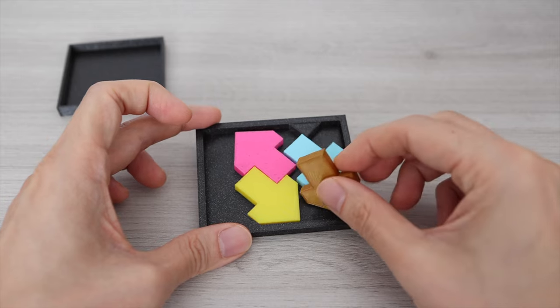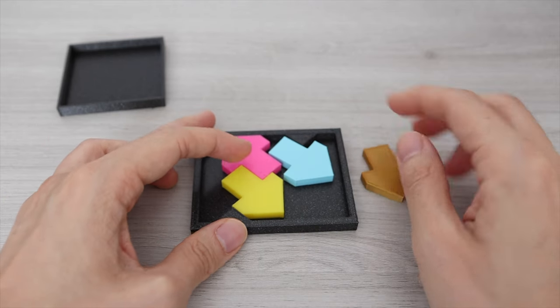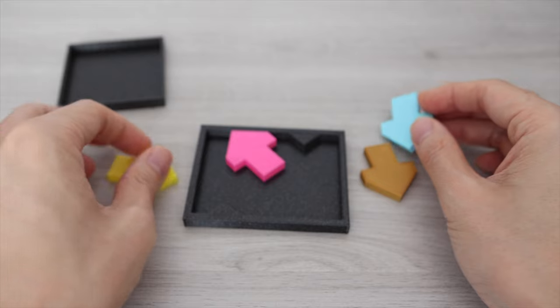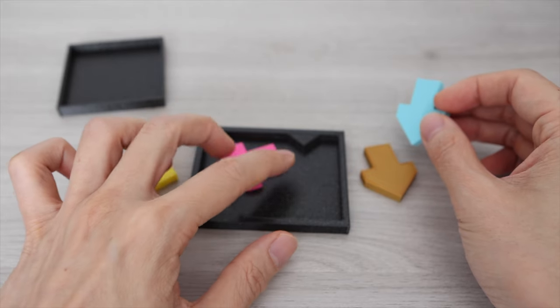After a while I spotted that given the tray is somewhat symmetrical in a rotational sense and the arrows are also symmetrical maybe there is a pattern for arranging them.